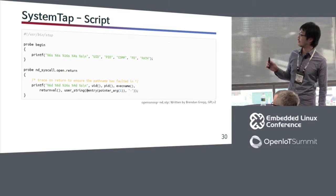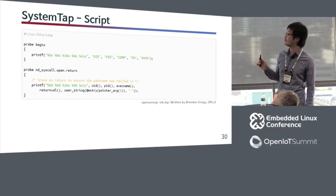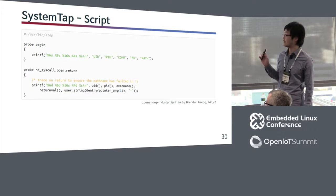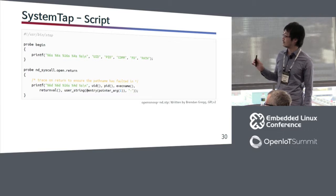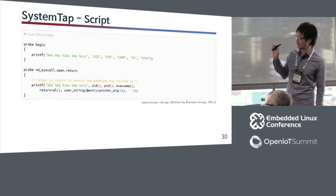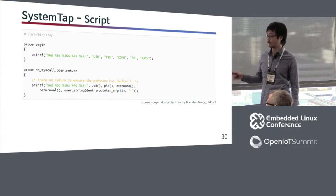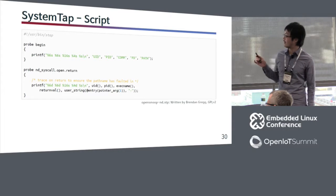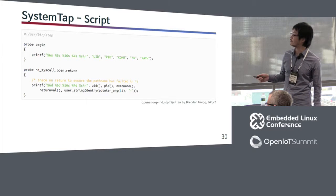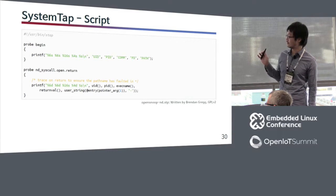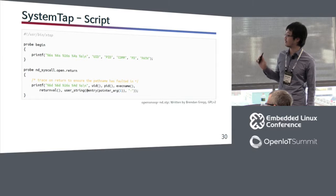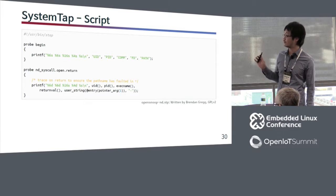This is an example of a SystemTap script — the source code of OpenSnoop. It's really simple, but can do almost the same thing as a perf tool as well.